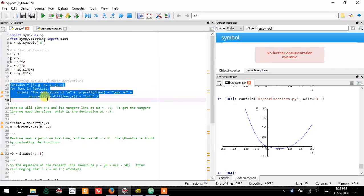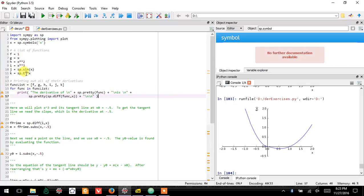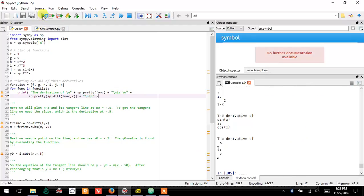And then what I basically have it do is loop through, go through the list and print out the derivative of each thing. So if I run this, it tells me all of these derivatives.